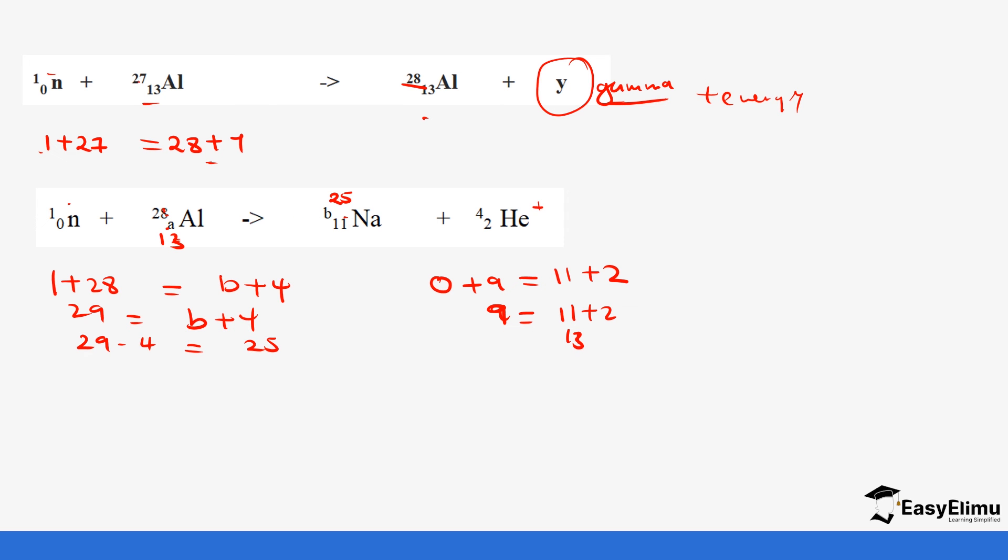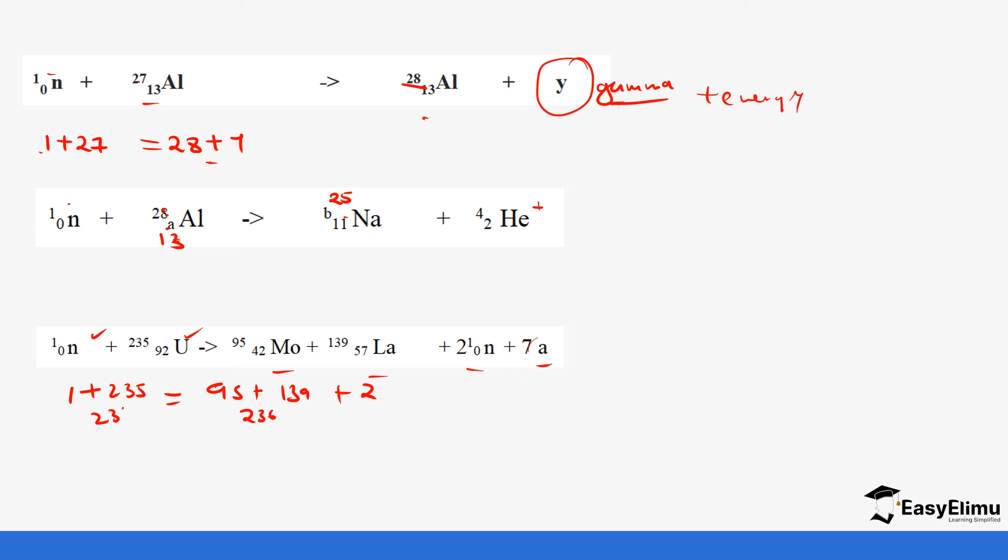Let's do another question. So we have the nuclei, uranium and then we form this product. So we are going to look for the value of a, what is a. So the reactants we have 1 plus 235. The mass number is equals to 95 plus 139 plus 2 times 1 which gives you 2. So it's going to be 95 plus 139 plus 2 which gives us 236. So this side is 236. This tells you we have a mass number of 0. And then the atomic number is going to be 0. This one plus 92. The reactant is equals to 42 plus 57 plus 0. So let's see if it's going to be 92. So 42 plus 57 gives us 99.